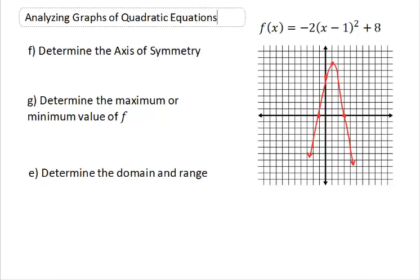We want to figure out our axis of symmetry, that's part F. Part G is we want to figure out does this graph have a maximum or a minimum and what is that maximum or minimum value. And in part H, we want to figure out what our domain and our range is.